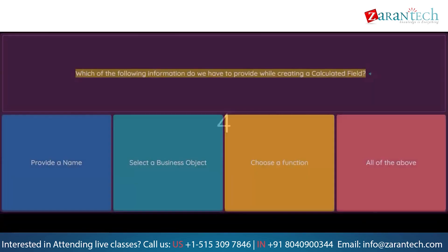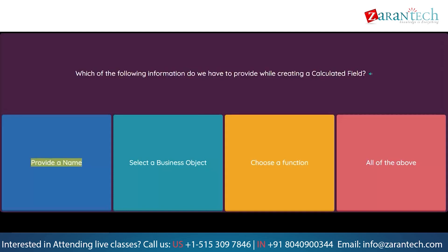Question: Which of the following information do we have to provide while creating a calculated field? Option 1: Provide a name. Option 2: Select a business object. Option 3: Choose a function. Option 4: All of the above.